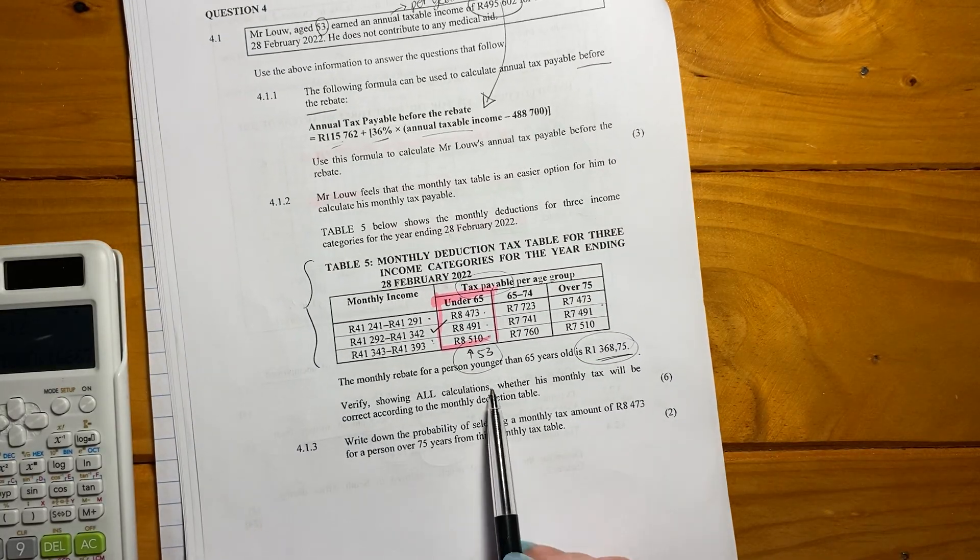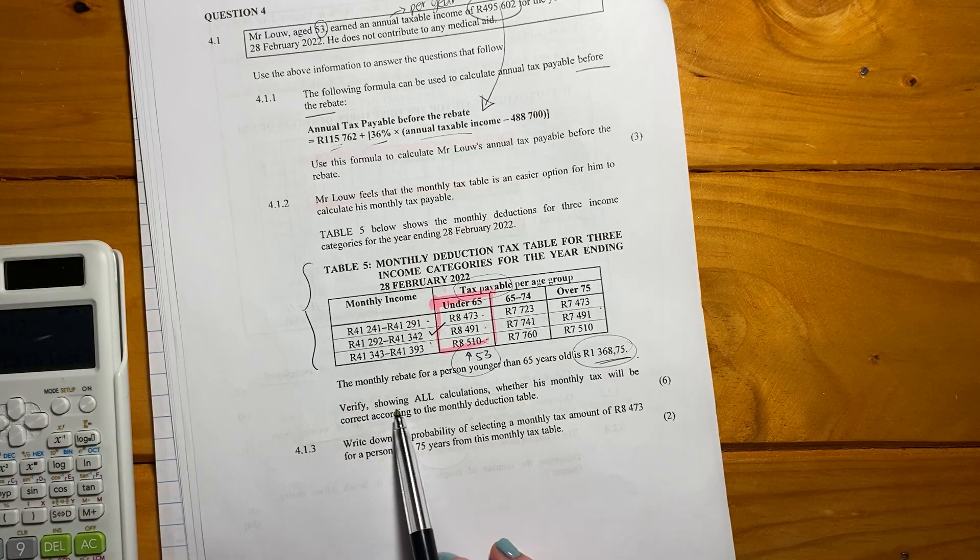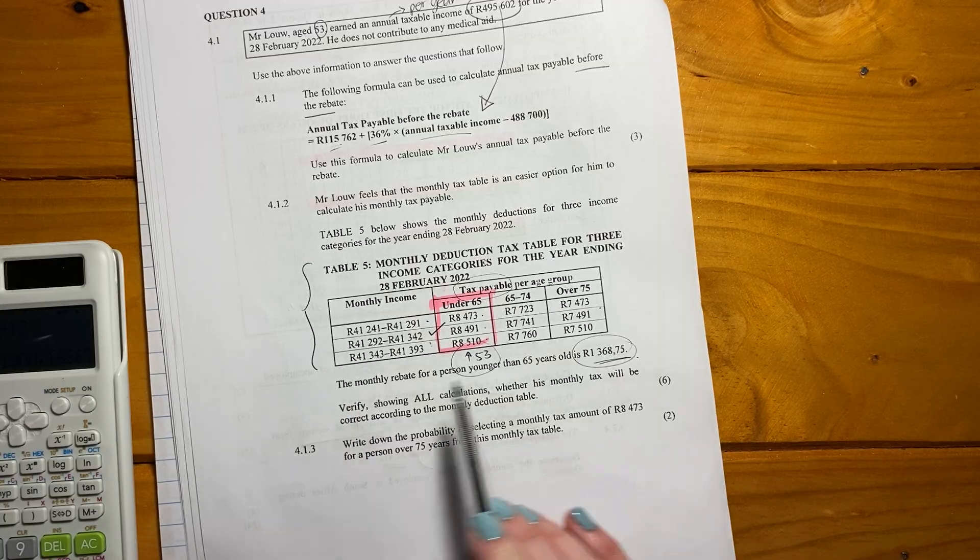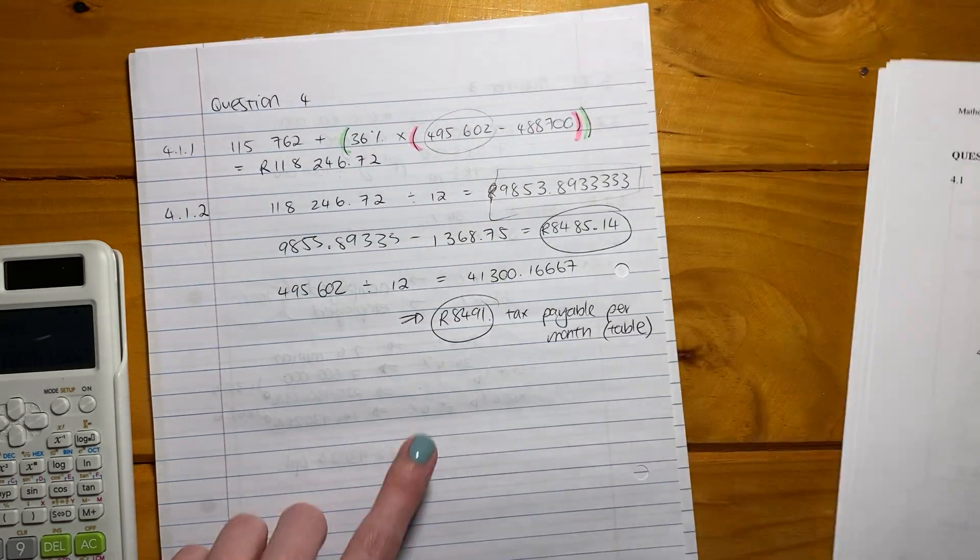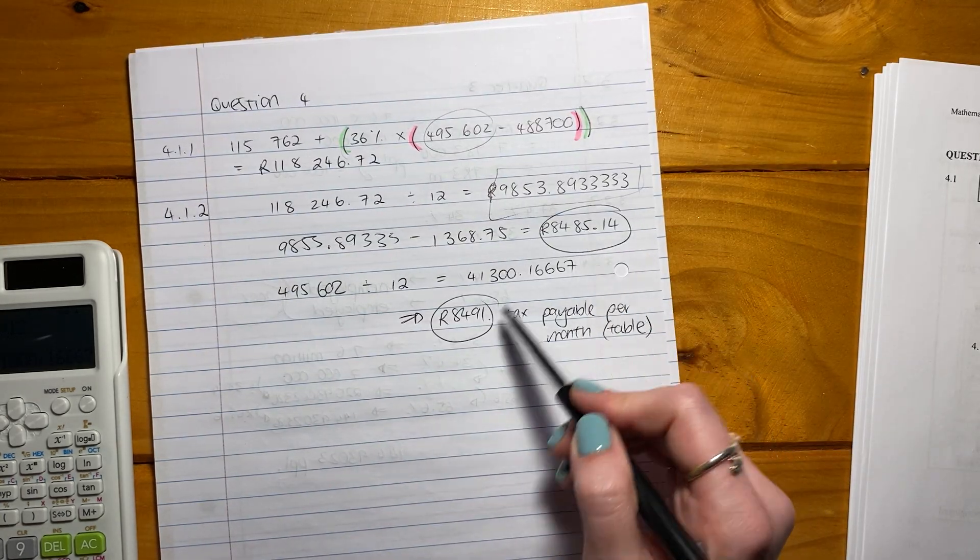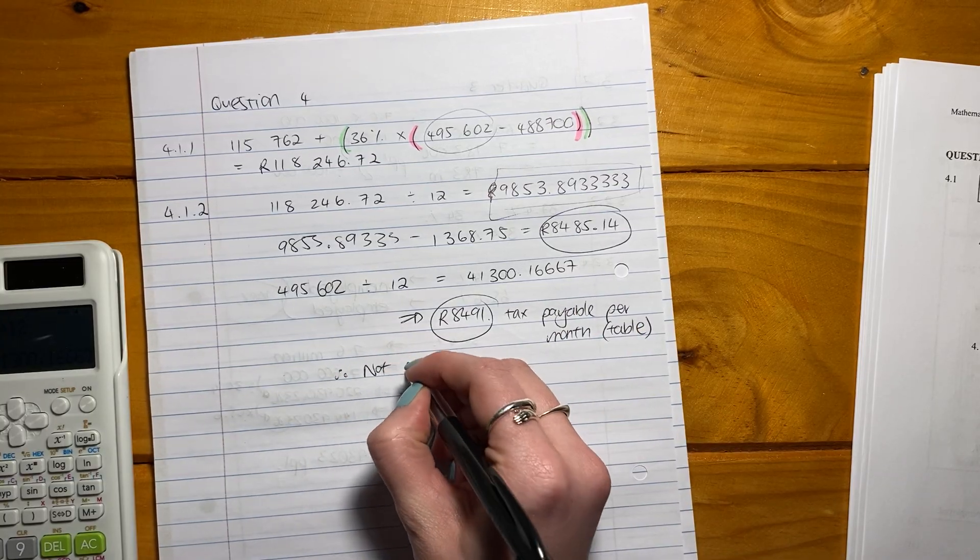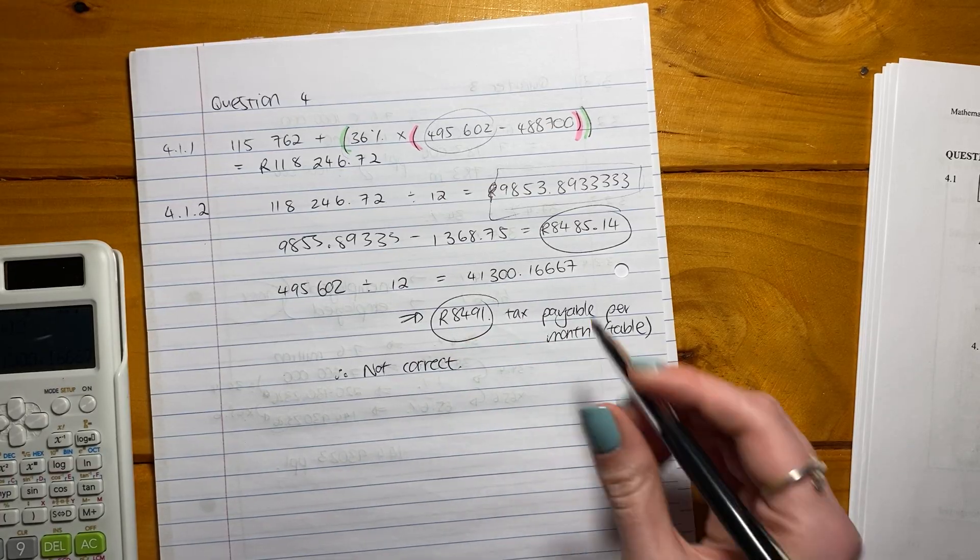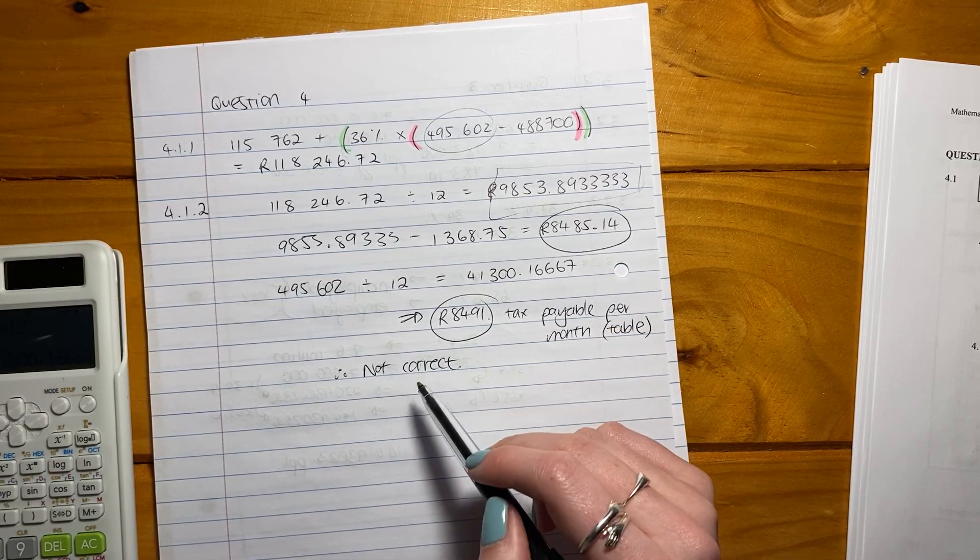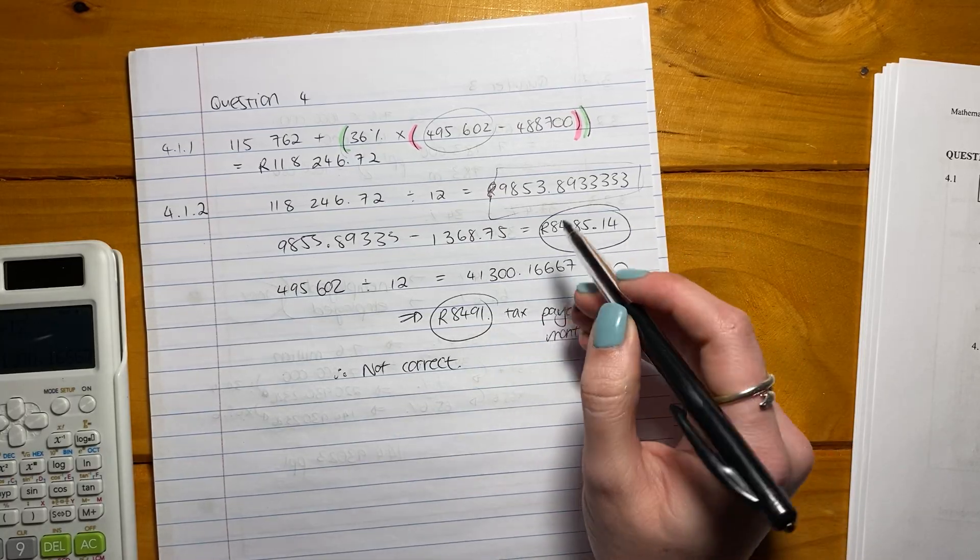And so it says, is the tax table, so it says verify showing all calculations whether his monthly tax will be correct according to the monthly deduction table. So actually, it's not because we did the calculation, and we can see that it's not. So we say, therefore, it's not correct. It's not correct. And this is quite important because students often do the calculations and they don't give a conclusion. You have to give a conclusion. It's very important.